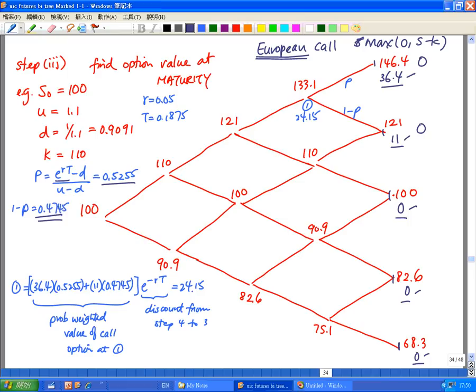And my question would be, given there's a probability of 0.5255, that the stock price end up at 146.4, at which case my option value is 36.4.